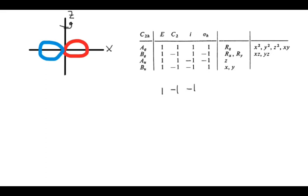Finally, if we do a sigma_h: since z is the principal axis, sigma_h is going to be the xy plane. X is defined going side to side and y is coming out toward us, so that xy plane would slice through the orbital along the x-axis as shown on the screen. If we reflect through that plane, the orbital stays the same — the red side and the blue side are just where they are. So we write down a 1, meaning this orbital is symmetric with respect to sigma_h.